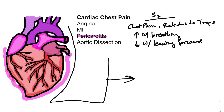The pain decreases with leaning forward. That makes sense because as you lean forward, gravity is going to pull the heart away from the lungs, so the contact is not going to be as direct between the lungs and the pericardium.